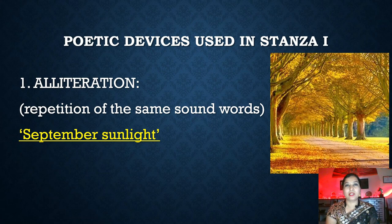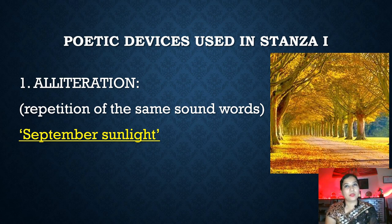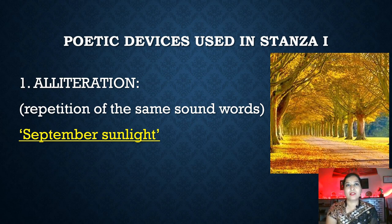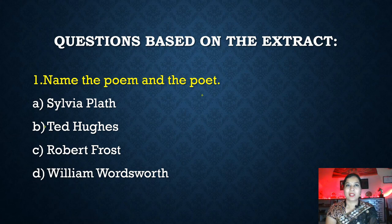Let's see the poetic devices used in stanza one. Alliteration is used. Alliteration is the repetition of the same consonant sound. As written here: 'September sunlight' — the 'S' sound is repeated in 'September' and 'sunlight'. Both these consonant sounds are put together, and that is why alliteration is used.